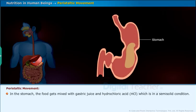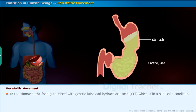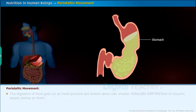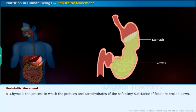In the stomach, the food gets mixed with gastric juice and HCl, which puts it in a semi-solid condition. The digestion of food goes on as most proteins are broken down into smaller molecules with the help of the enzyme pepsin acting on them. Chyme is the process in which the proteins and carbohydrates of the soft, slimy substance of food are broken down.